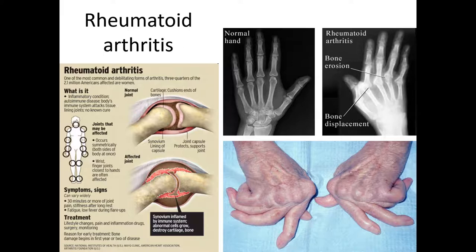In rheumatoid arthritis, your body begins to attack cartilage in your joints. Cartilage acts as a pad to protect your bones, preventing them from rubbing on one another and eroding, and helps hold bones in place so they don't slip at a joint. When the immune system makes a mistake and destroys this cartilage, bones can erode and slip out of place. It can be very debilitating, especially in the hands. About 2.1 million Americans are affected, and 75% of those are women.